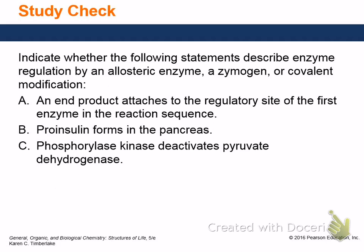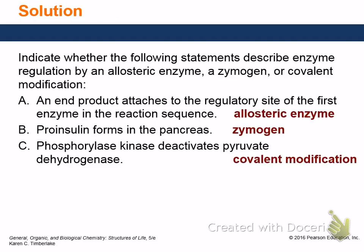Study check: indicate whether the following describe allosteric enzyme regulation, zymogen, or covalent modification. 'An end product attaches to the regulatory site of the first enzyme in the reaction sequence' — allosteric, because it's feedback control. 'Pro-insulin forms in the pancreas' — zymogen, a pro-enzyme. 'Phosphorylase kinase deactivates pyruvate' — covalent modification, because phosphorylation is a covalent modification.